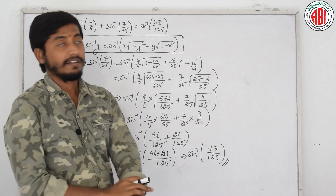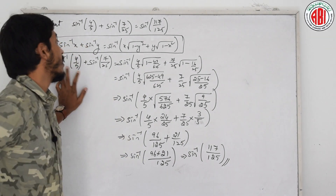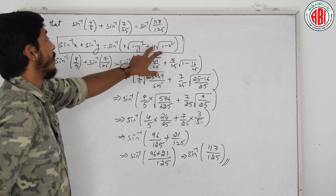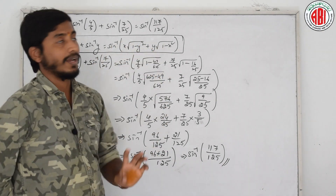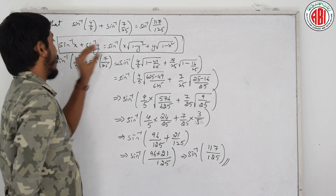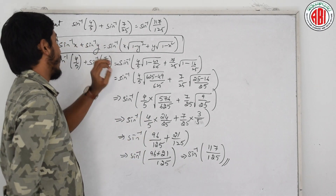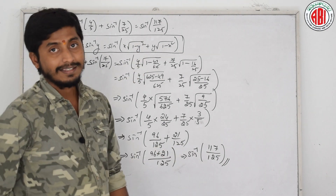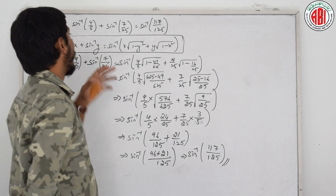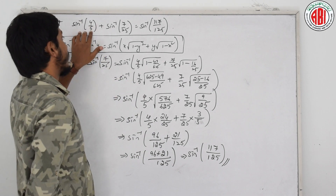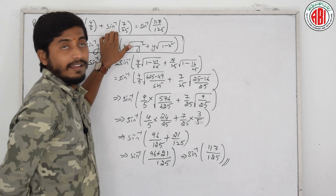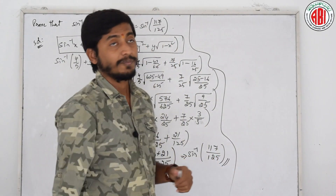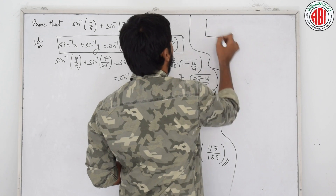The formula is sin inverse x plus sin inverse y equals sin inverse of x into root of 1 minus y squared plus y into root of 1 minus x squared. We substitute 4 by 5 for x and 7 by 25 for y, and by simplifying we get the answer. Alternatively, we can assume this as angle a and this as angle b, and use the triangle method.